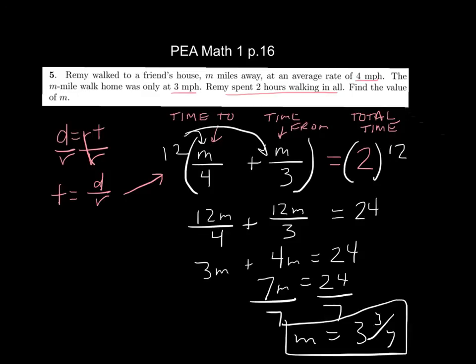I would not keep this one as an improper fraction, just because since we're talking about miles, I wouldn't tell somebody, oh, it's 24 sevenths of a mile. You would say it's 3 and 3 sevenths, or give the decimal there.